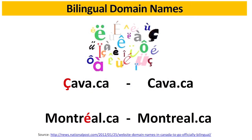In Canada, you can register domain names using French characters like the cedilla and accents. For example, if you want to create a website like sava.ca, you can register it with the cedilla. But I tell people: if you can register both — with and without the accent — it's good, because some people don't know how to type the cedilla. So please buy both if available, otherwise change the name.